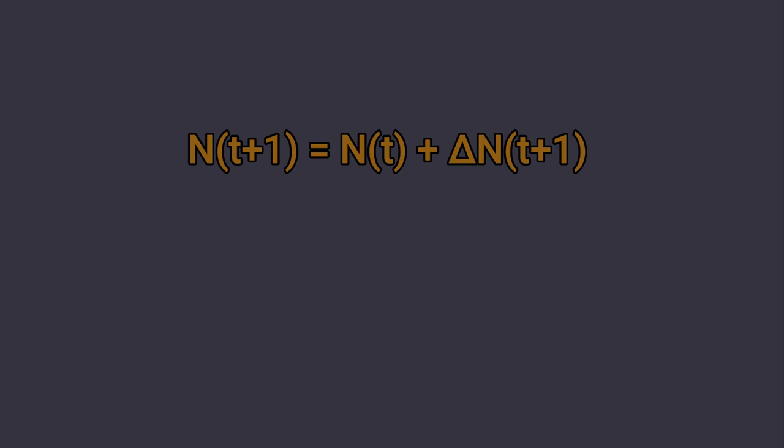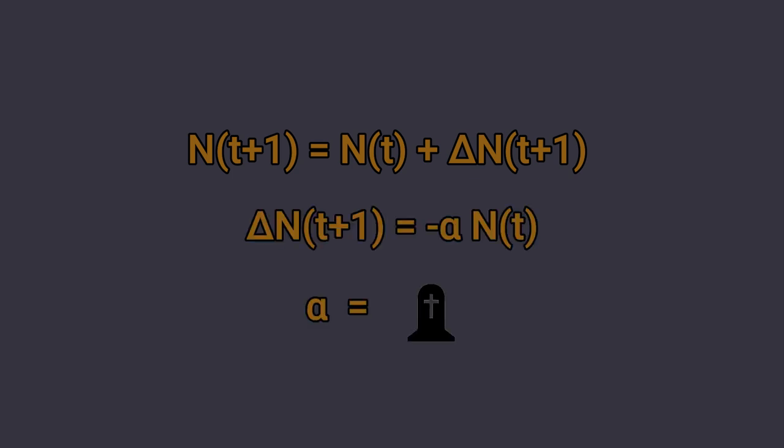This is not surprising at all. If a single Wilpu can only die, the total population can only go extinct. But let us see mathematically why this is true. The population at time t plus 1 is the same population at time t plus the increment, and in this case the increment is minus alpha times N, where alpha is the death chance of 0.5%.